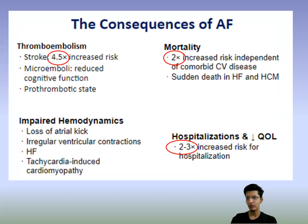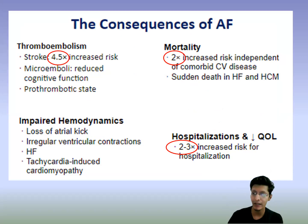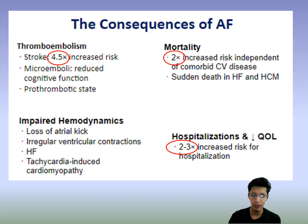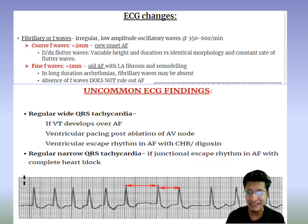The consequences of AF include thromboembolism — there is a 4.5 times increased risk of thromboembolism and two times more risk of mortality. It is also associated with heart failure and hypertrophic cardiomyopathy. Impaired hemodynamics can lead to heart failure, and there is a two to three times increased risk of hospitalization and reduced quality of life.